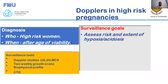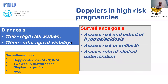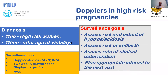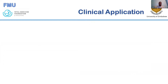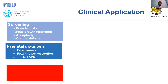The surveillance goals include assessing the risk and extent of hypoxia and acidosis, assessing the risk of stillbirth, assessing the rate of clinical deterioration, and planning the interval of the next visit. Close monitoring of these high-risk pregnancies is needed to establish the appropriate timing of delivery — not too late, not too early. The clinical applications of Dopplers include screening.